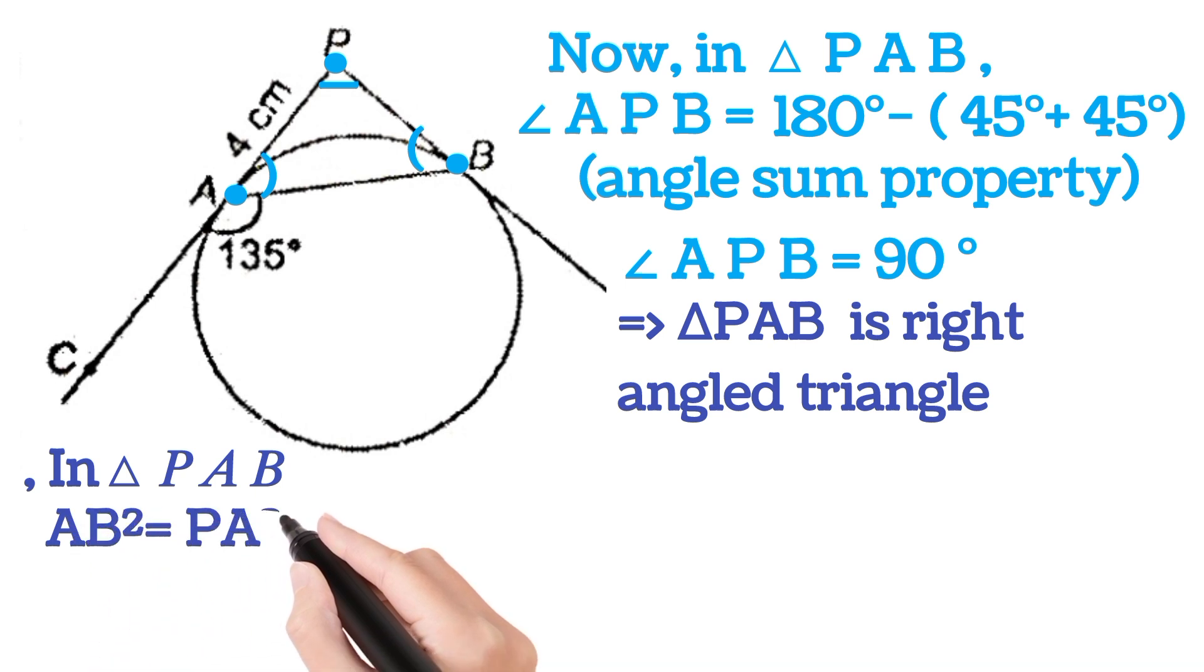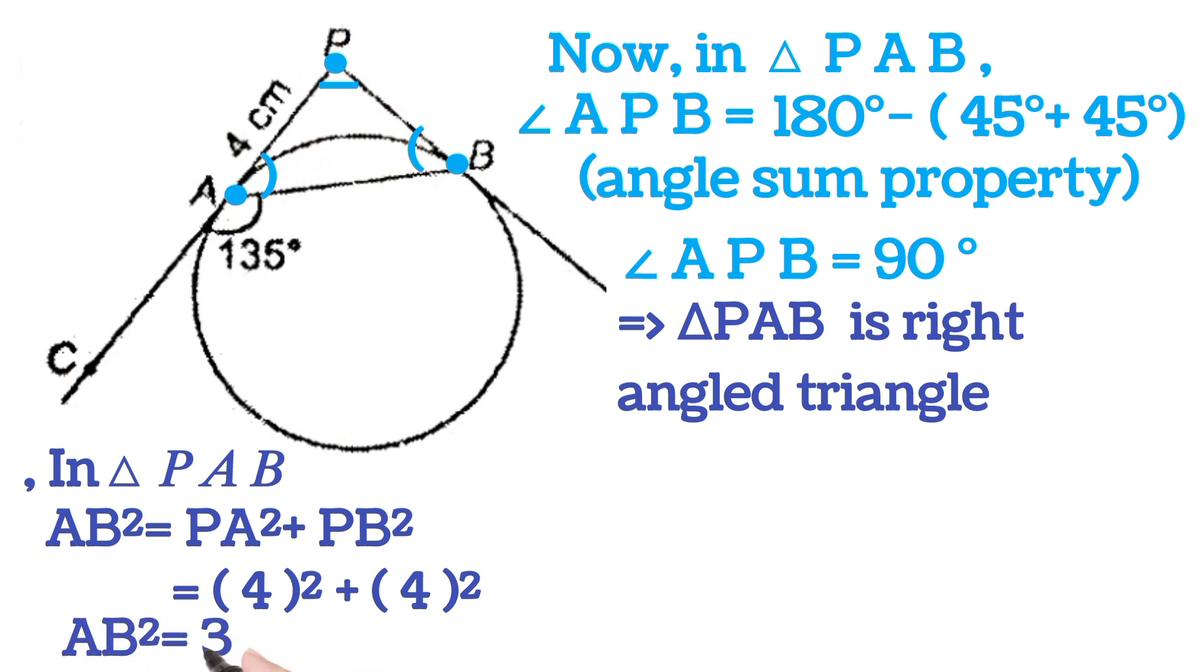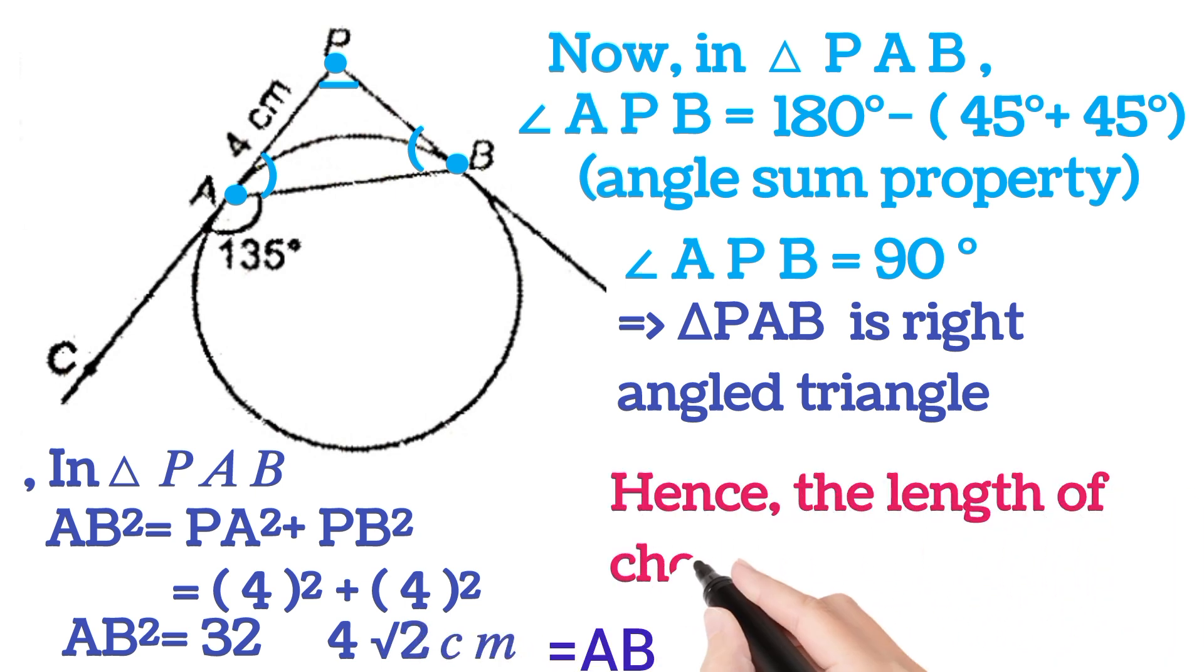In triangle PAB, AB square is equal to PA square plus PB square. On substituting the value we will get 4 square plus 4 square, that is AB square is equal to 32, or AB is equal to 4 root 2.